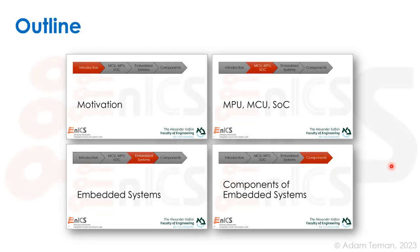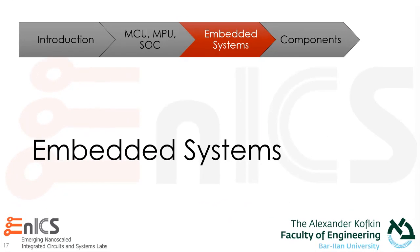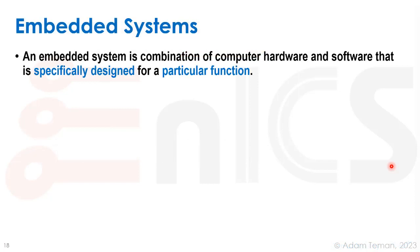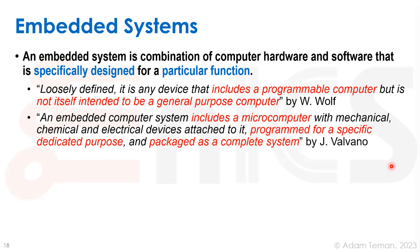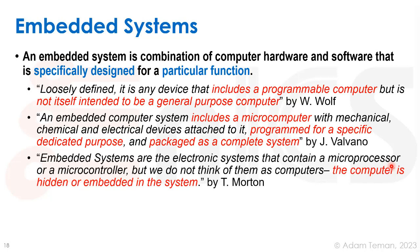Following our definitions of MPU, MCU, and SoC, these things are used primarily inside embedded systems. An embedded system is a combination of computer hardware and software specifically designed for a particular function. Loosely defined, it is any device that includes a programmable computer but is not itself intended to be a general-purpose computer. An embedded computer system includes a microcomputer with mechanical, chemical, and electrical devices attached, programmed for a specific dedicated purpose and packaged as a complete system. Embedded systems are electronic systems that contain a microprocessor or microcontroller, but we do not think of them as computers.